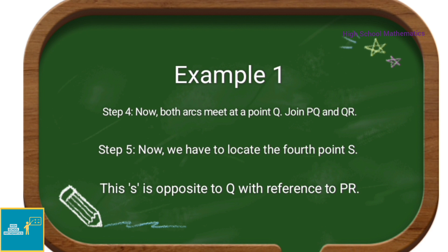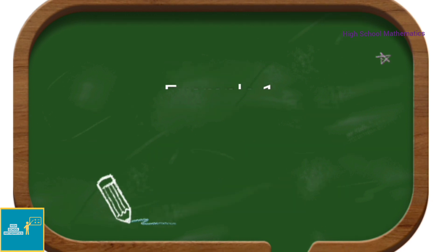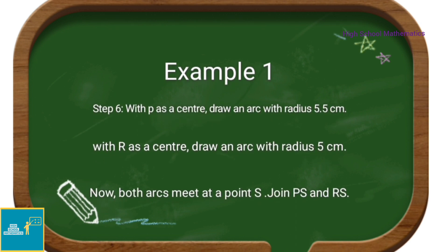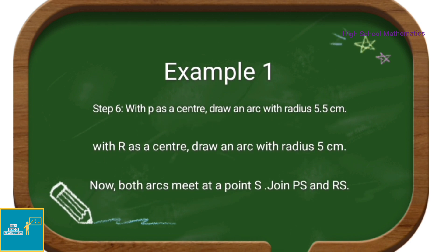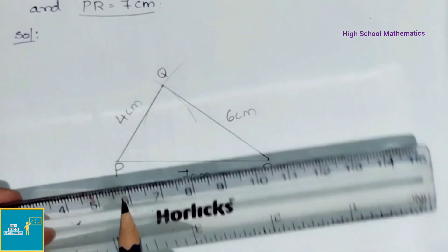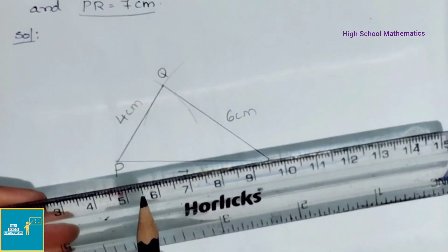Step 5: now we have to locate the 4th point S. This S is opposite to Q with reference to PR. See now step 6: with P as center, draw an arc with radius 5.5 cm, and with R as center, draw an arc with radius 5 cm. Now both arcs meet at point S — join PS and RS. Therefore PQRS is the required quadrilateral.